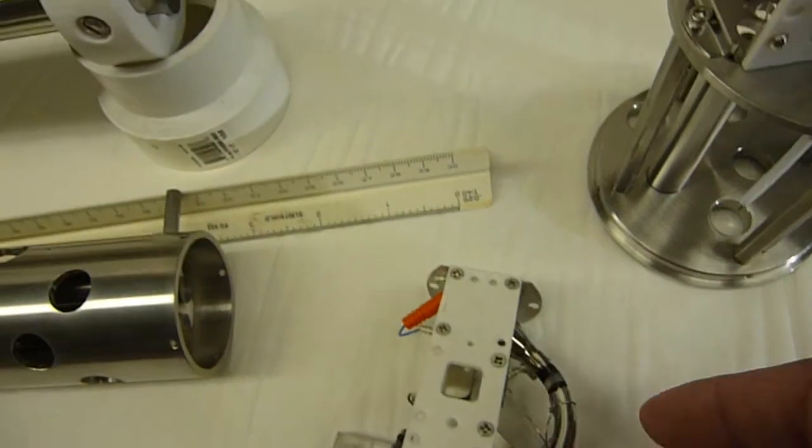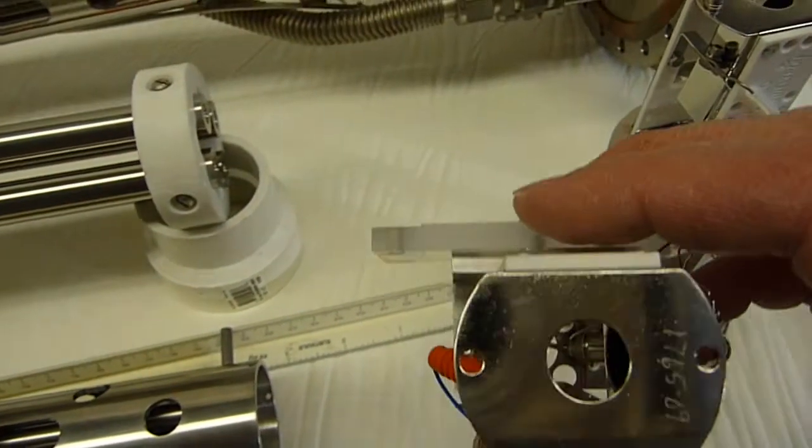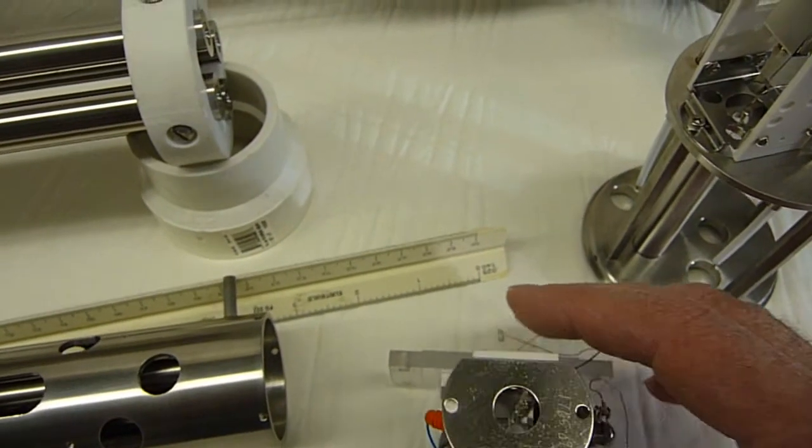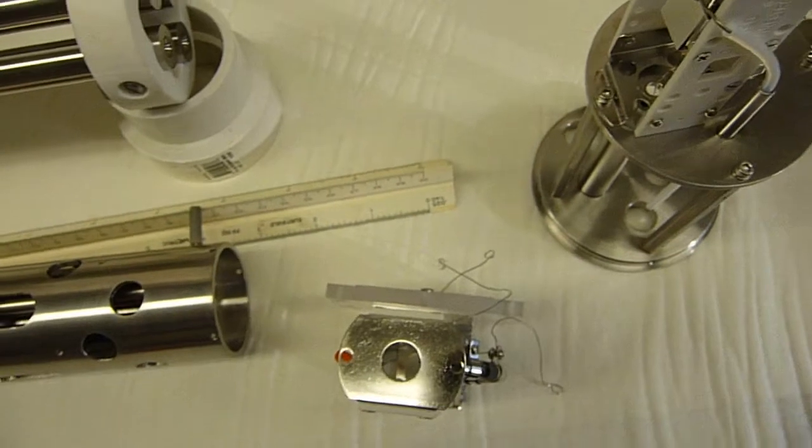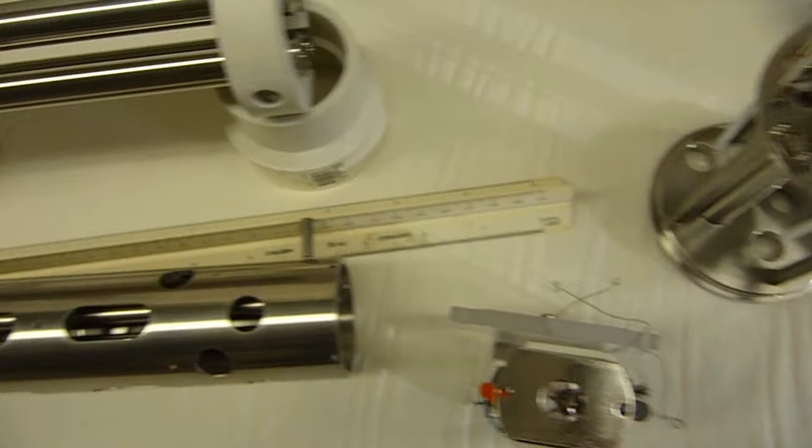This is the electron multiplier. And the reason it's off-axis is that useless things, in the mind of a mass spectrometer, such as photons, don't get detected.